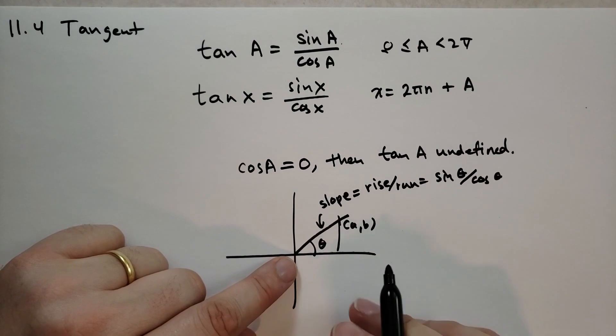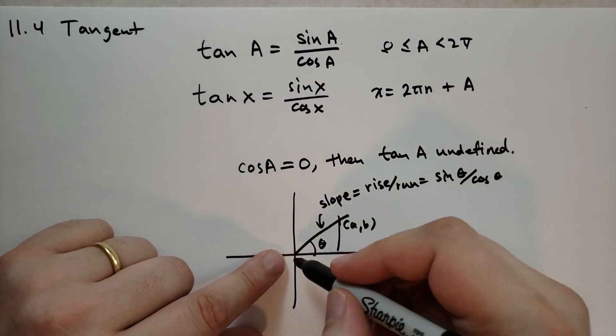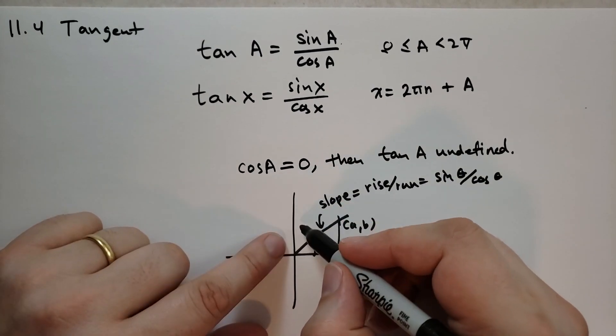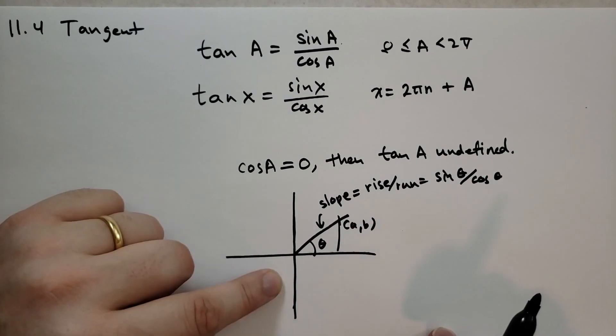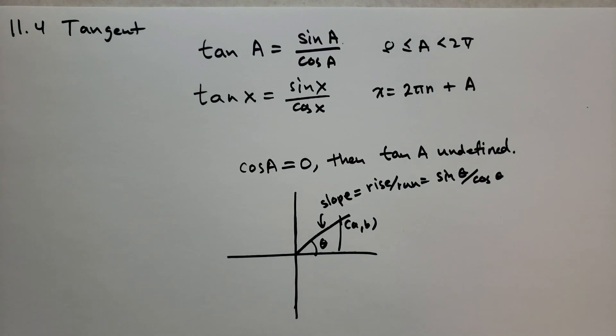The reason why the tangent is not defined when the cosine of that angle is zero is because we're talking about a vertical slope. And that slope is undefined because the run is zero.